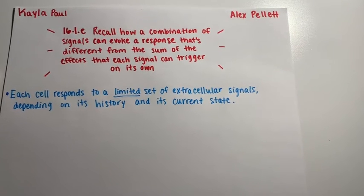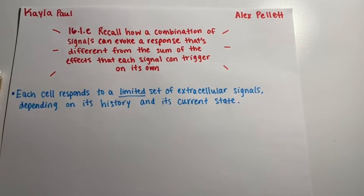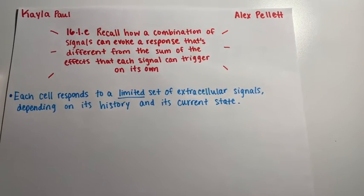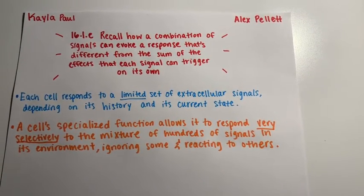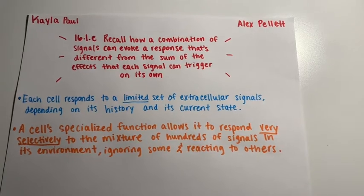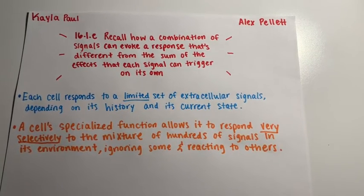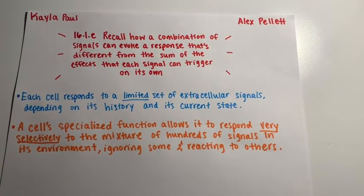Each cell responds to a limited set of extracellular signals, depending on its history and its current state. A cell's specialized function allows it to respond very selectively to the mixture of hundreds of signals in its environment, ignoring some and reacting to others.